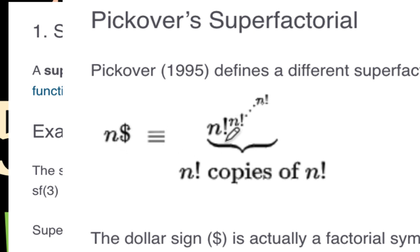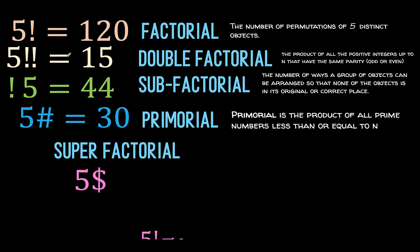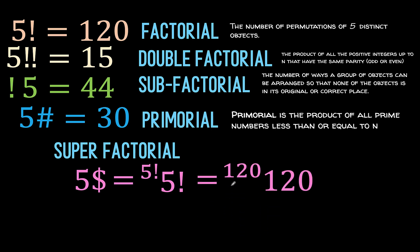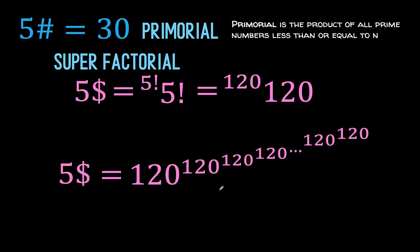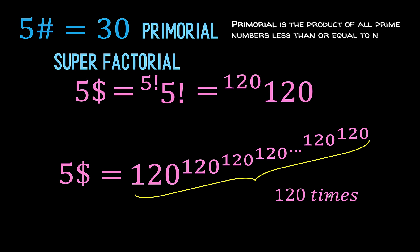This is equal to n factorial raised to n factorial raised to n factorial, until you have n factorial copies all in all. So going back to our problem, for 5 dollar, this is the tetration of 5 factorial. Since 5 factorial is 120, you have the tetration of 120, expanded as 120 raised to 120 raised to 120 raised to 120 raised to 120, until you have 120 copies — that is 120 120s — all in the form of a power tower.